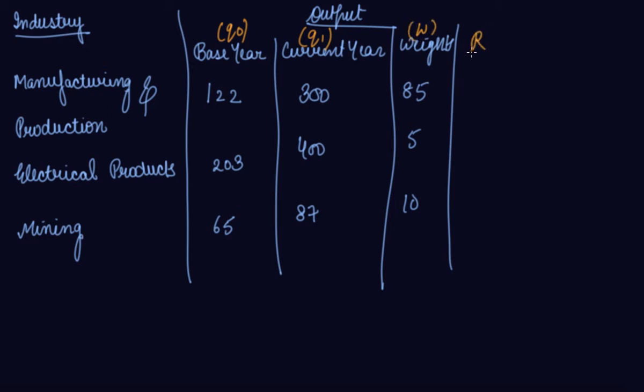First you find out the R that is related to your quantity, that is Q1 divided by Q0 into 100. Which here is 300 divided by 122 into 100, which comes out to be 245.90. Then it is 197, then it is 134.